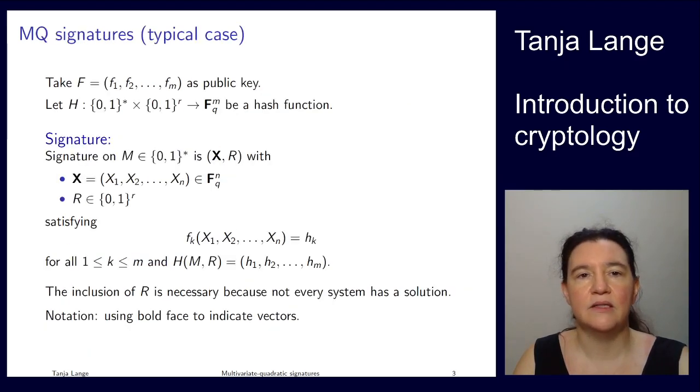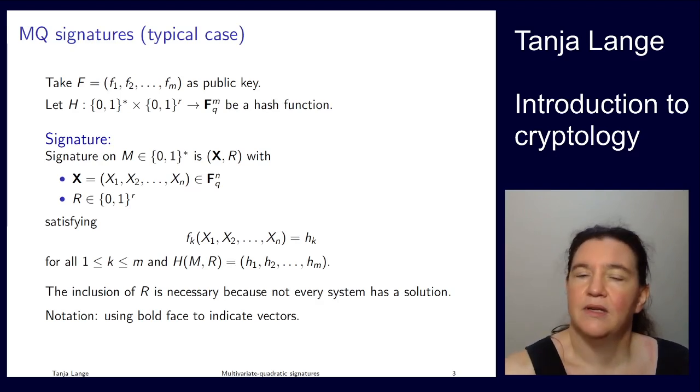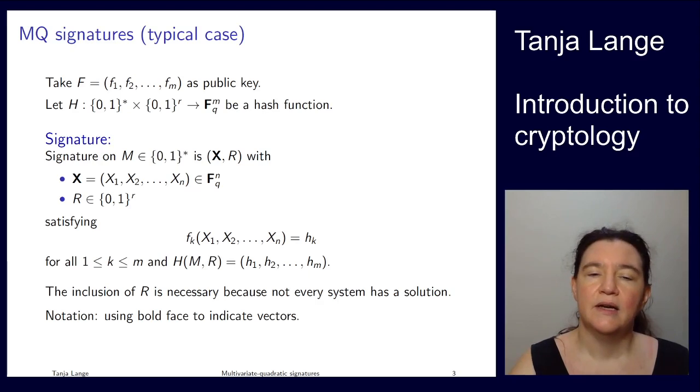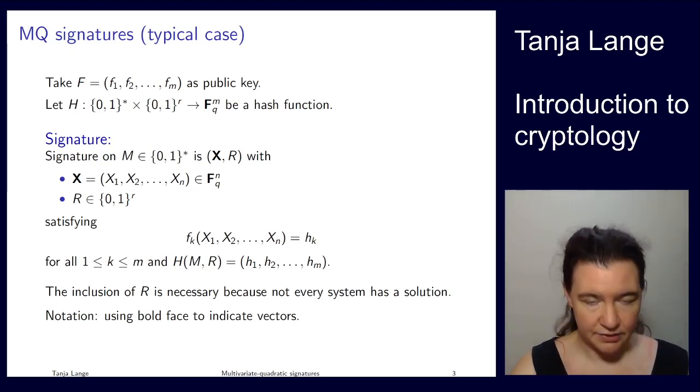And then the stereotypical example of how multivariate quadratic signatures are working is exactly wrapping up this hard problem. So somebody gives you the hash of a message, and ignore this r for the moment, and that is the right hand side for which you are asked to find a pre-image. This is a hard problem. So if you don't know anything other about the system f, then you can't solve this. And that should be the problem that the attacker is faced with.